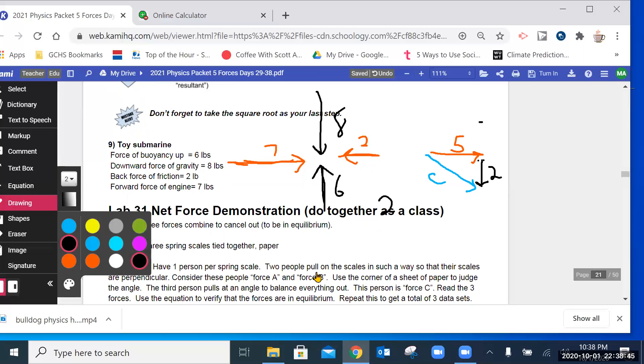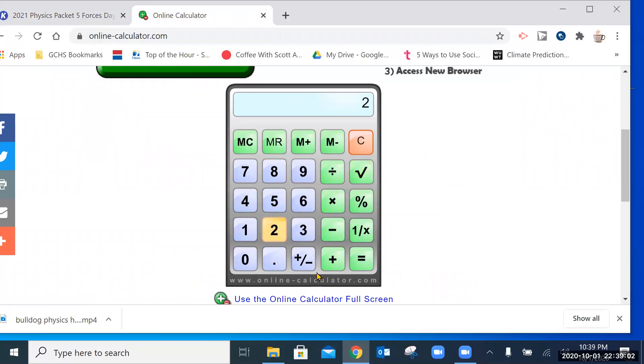So, two squared plus five squared equals C squared. 4 plus 25 equals C squared. 29 equals C squared. So, C is 5.38.